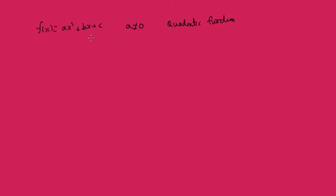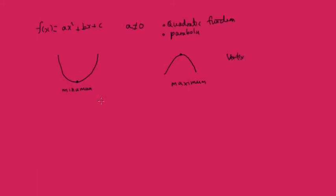The graph of a quadratic function is a parabola. A parabola will always have either a minimum or a maximum. This point on our minimum or maximum is called the vertex of the parabola. If a is greater than 0, we get a minimum — the valley shape. If a is less than 0, therefore negative, we get a maximum.